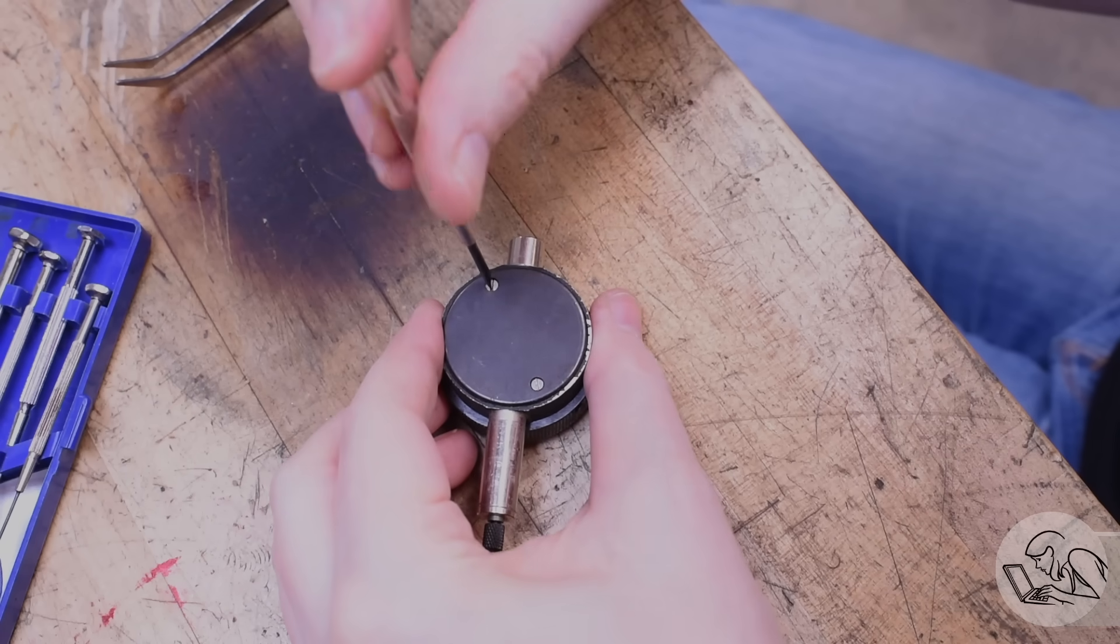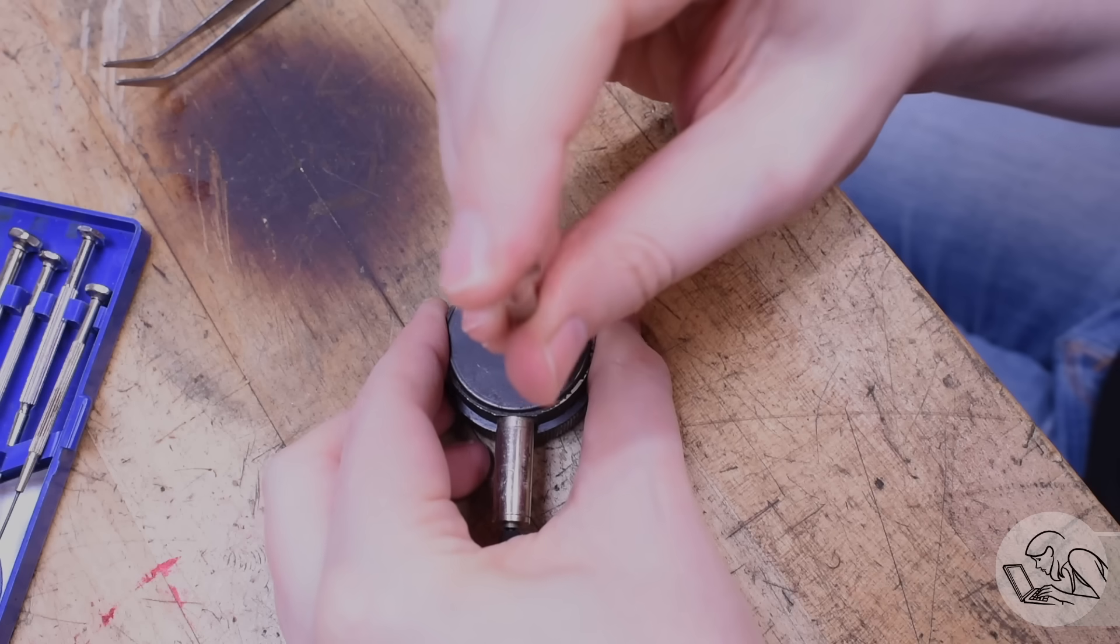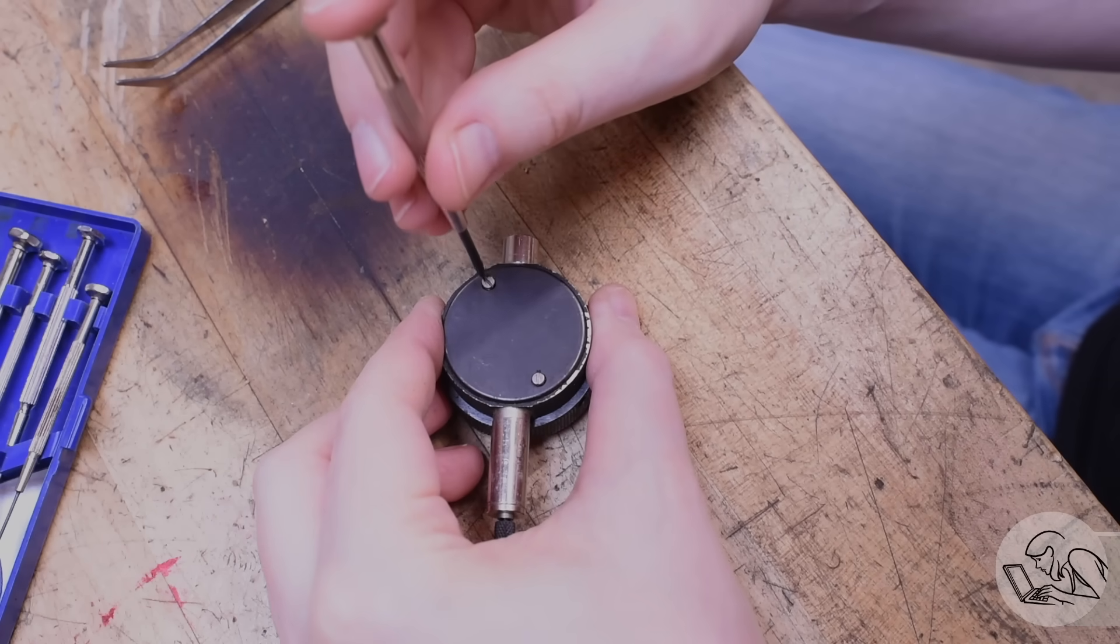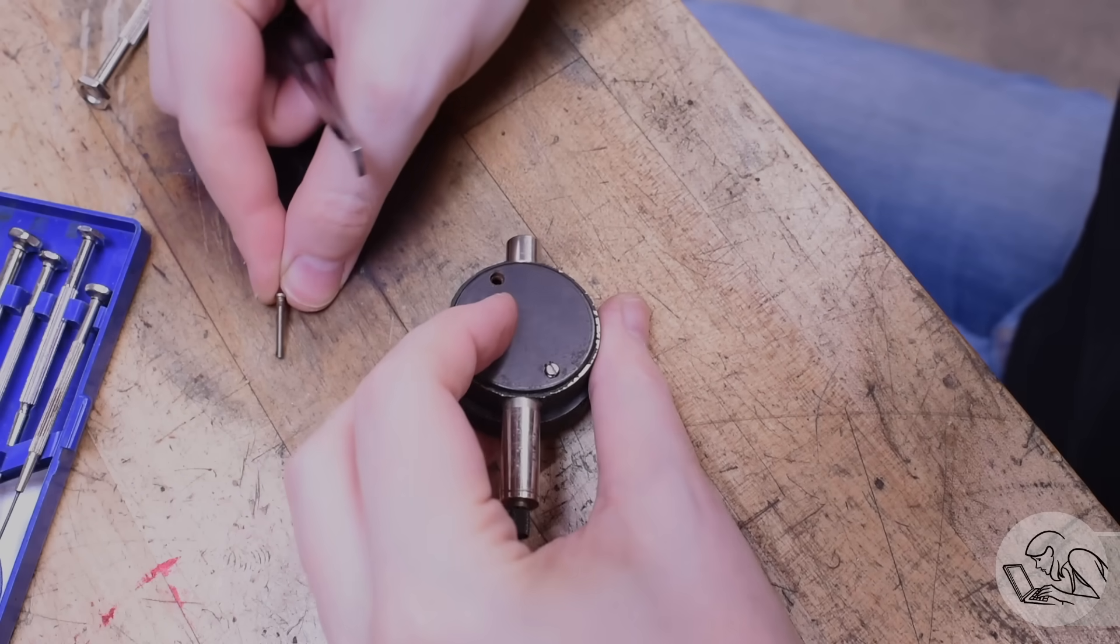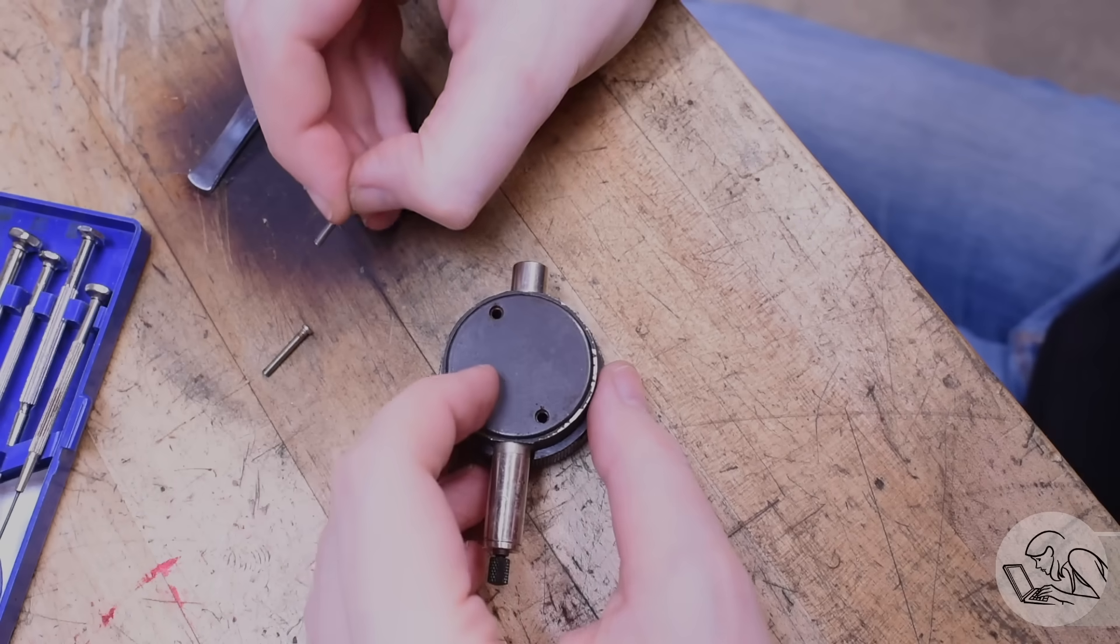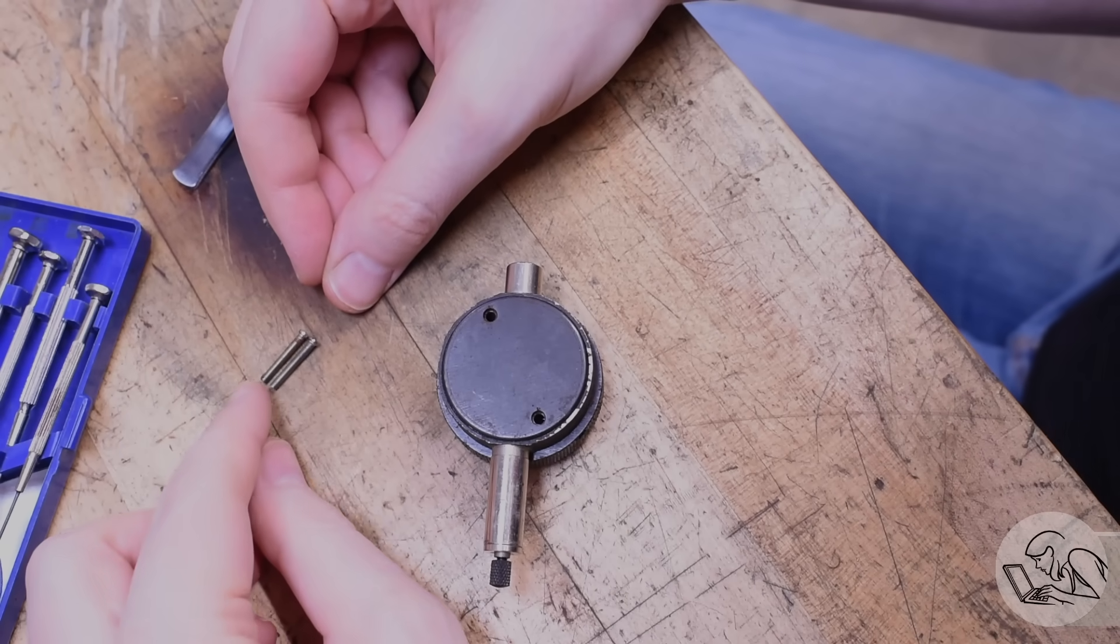I'll start by removing the back. Really you just need some pretty basic tools to work on indicators. Some screwdrivers, some picks, things like that. Now there are some more difficult repairs that I'll get into in a minute that do require specialist tools, particularly watchmakers tools, but I'll show you what we can do right up to that point. Don't assume all the screws in a given assembly are the same length, so you always want to check them.